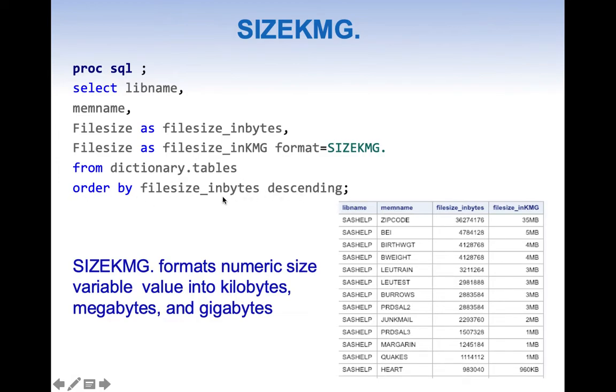Basically we are ordering by file size in descending order, which means our results are ordered from higher byte size to smaller byte size. Now let us try to understand how SIZEKMG works. If you can see the results, it shows 1 MB for sashelp.quakes table whereas for sashelp.heart table it shows 960 KB.